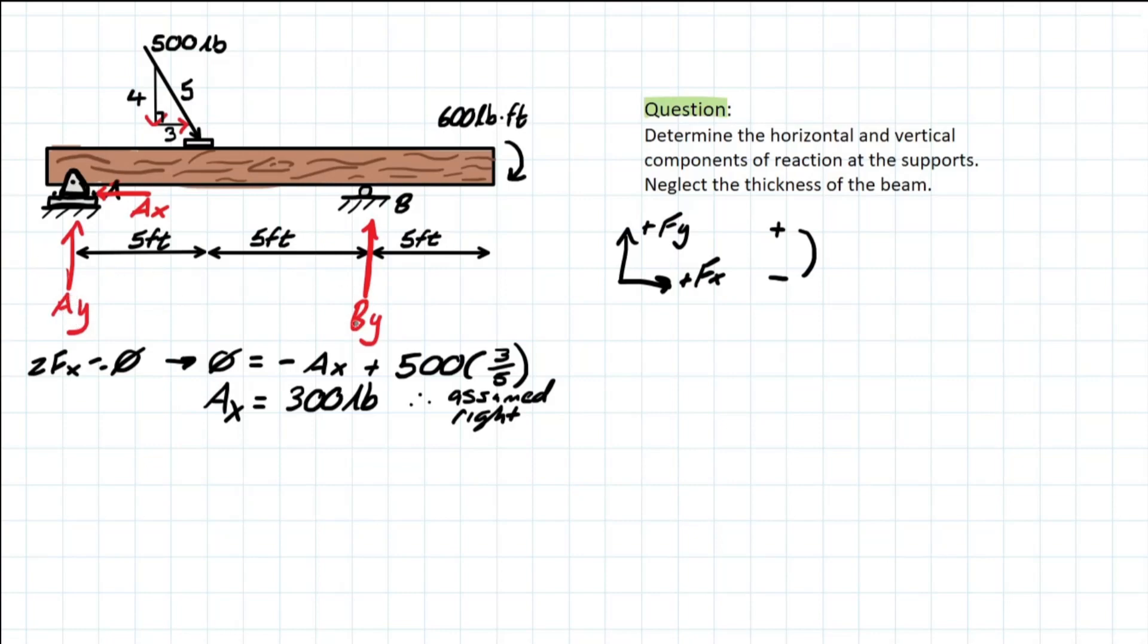So how do we solve for Ay and By now? We have two unknowns and the summation of forces at y equals zero won't work because you can't solve for two unknowns in one equation. This is why we're going to use the moment equation.